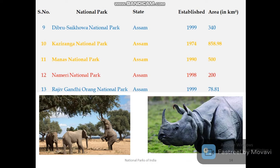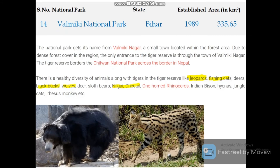Assam has around five national parks. Among those, Kaziranga National Park is the popular one, known for its single-horned rhinoceros. Along with that, both Manas and Kaziranga are UNESCO World Heritage Sites.